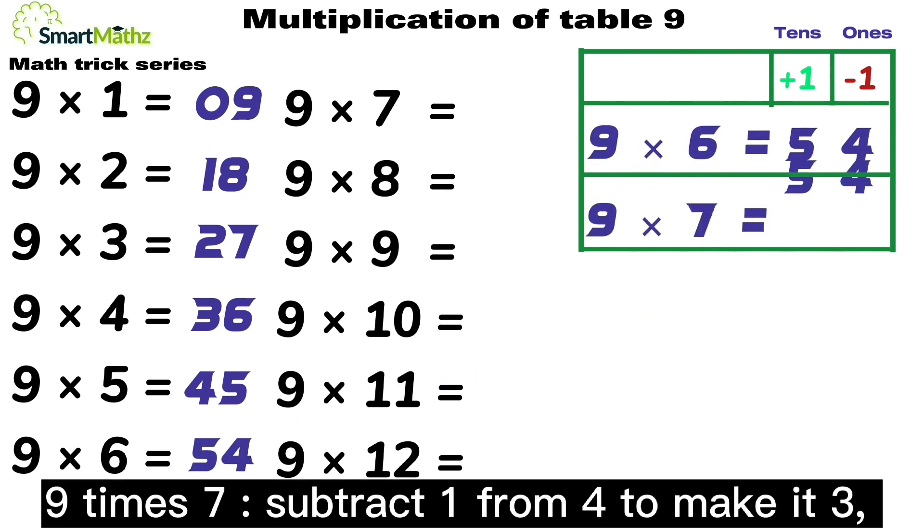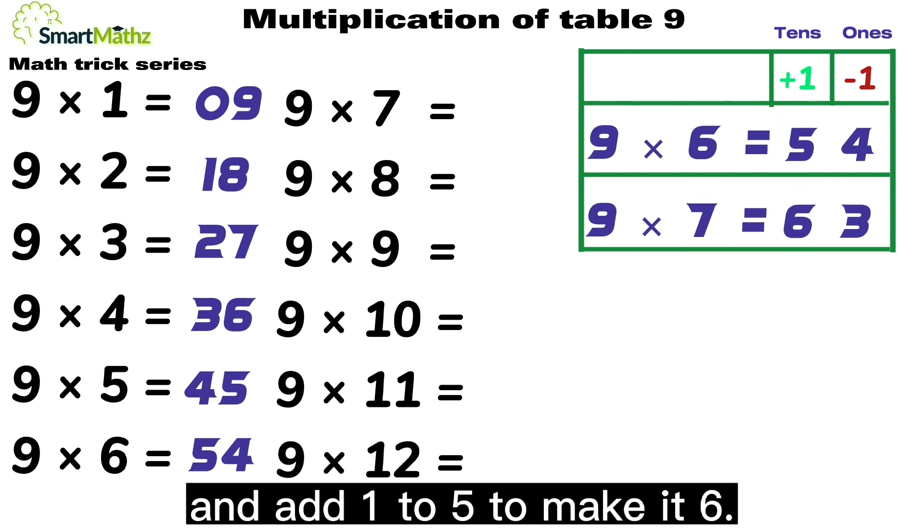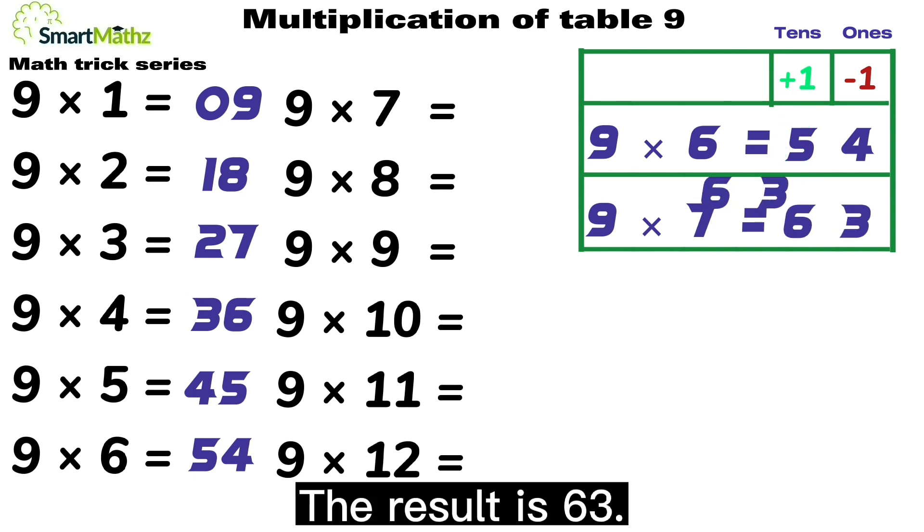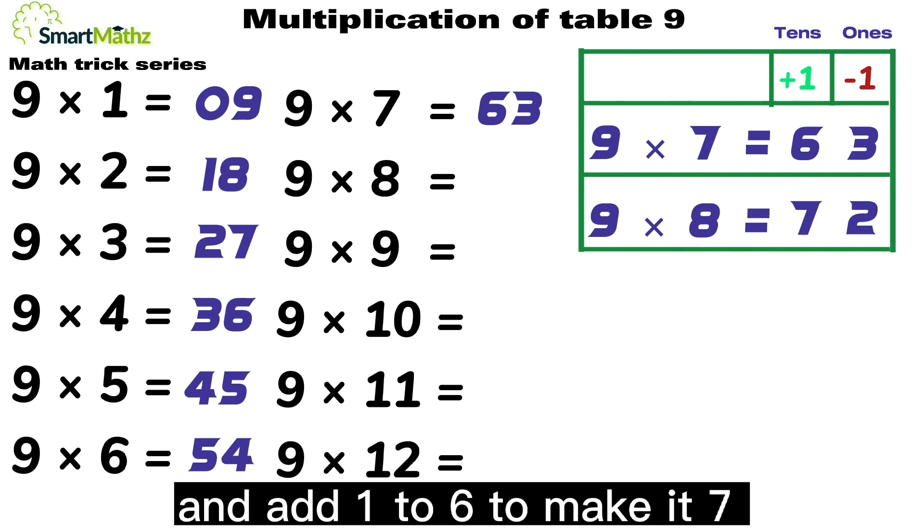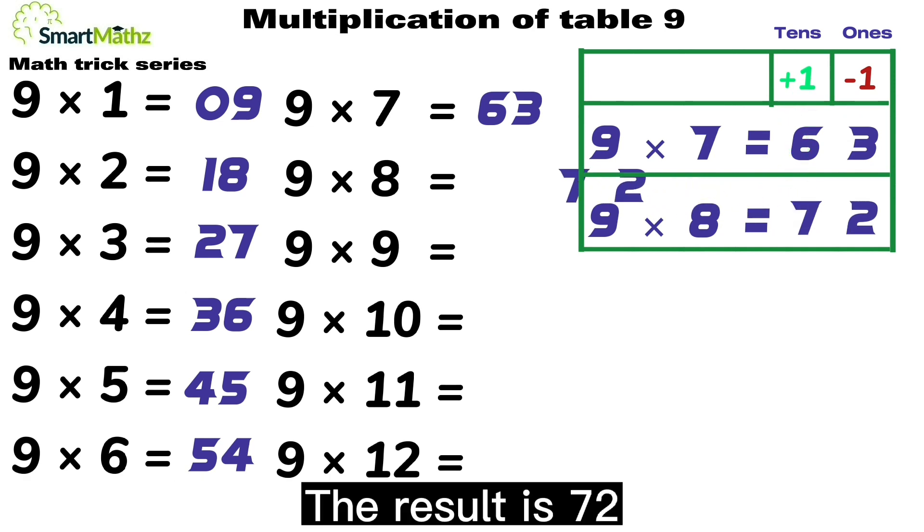9 times 7, subtract 1 from 4 to make it 3, and add 1 to 5 to make it 6. The result is 63. 9 times 8, subtract 1 from 3 to make it 2, and add 1 to 6 to make it 7. The result is 72.